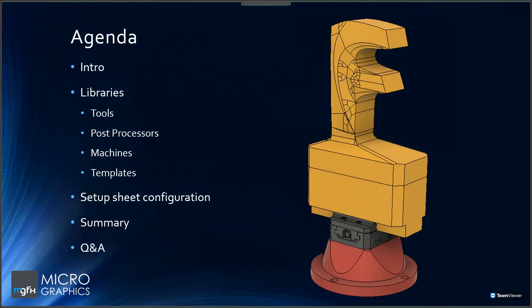Moving on to today's agenda, we'll be looking at the following topics: starting off with an introduction to CAM administration, covering a few areas around how libraries can help. We then move on to highlighting the different types of libraries that are available, the benefits of using them and how they are used, before discussing setup sheets and configurations. Lastly, we'll close with a summary and Q&A session.